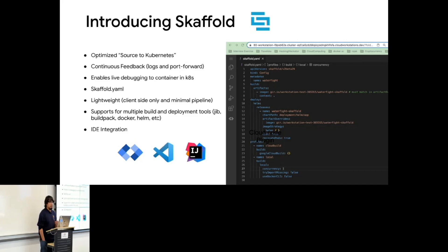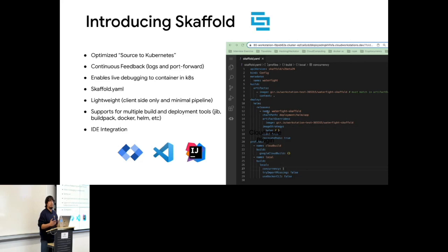Skaffold also enables live debugging — configuring remote debugging for a container running in Kubernetes, though I won't demonstrate it today as the documentation covers it well. Skaffold is a lightweight client-side tool — nothing needs to be installed in your Kubernetes cluster. In our case it runs on the workstation VM. It supports multiple build and deployment tools: Jib, Buildpacks, Docker, Helm, Kustomize, and more. Importantly, it has IDE integration as a VS Code and IntelliJ extension called Cloud Code.